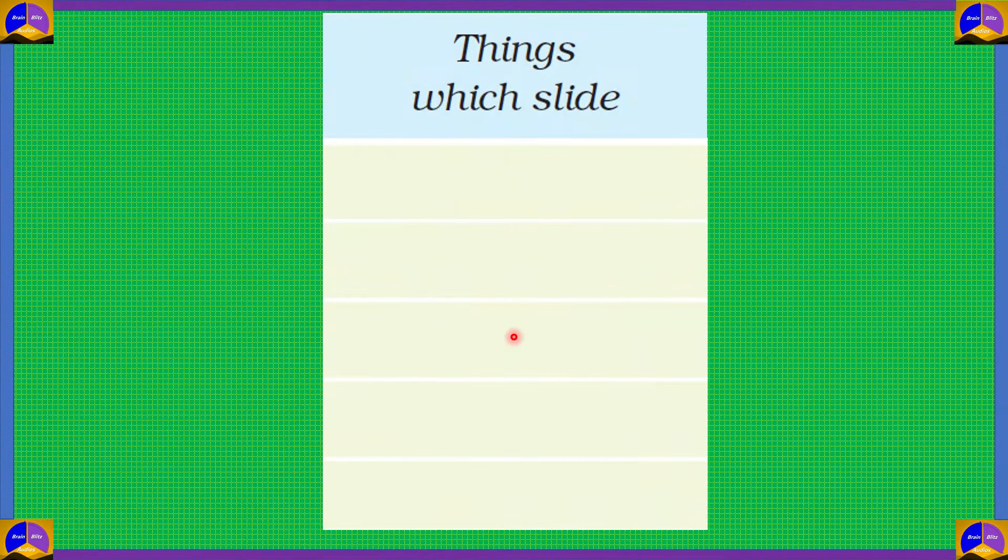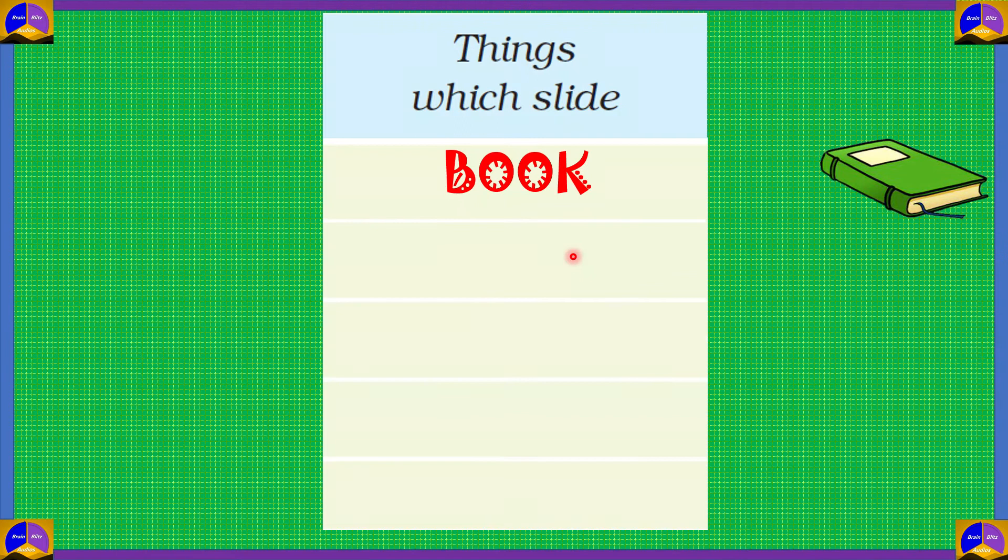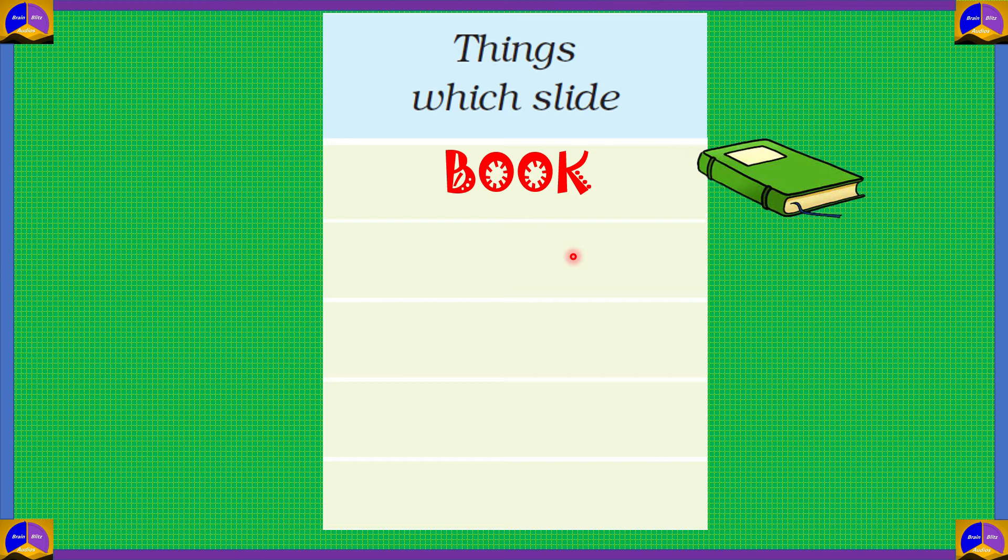Next, let's look at things which slide. Now, a book. If we push a book across the table, it slides. It does not roll. It does not go round and round.